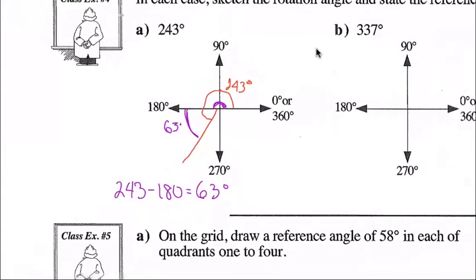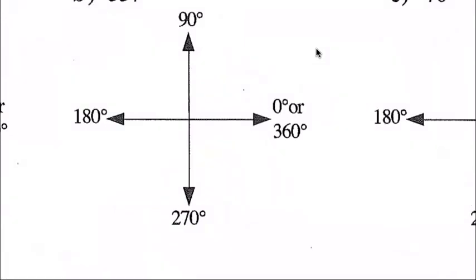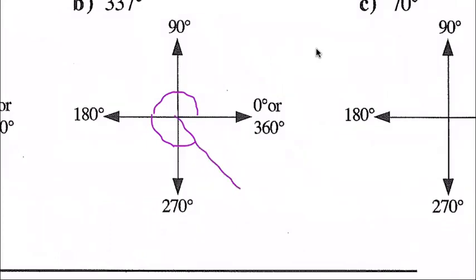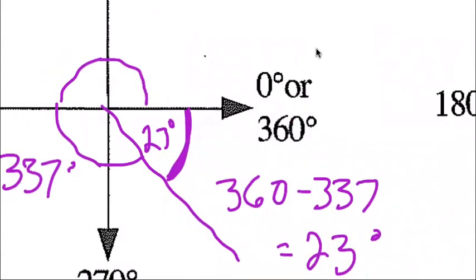Question B: 337 degrees. Start on the positive x-axis, go counterclockwise — 90, 180, 270 — and 337 is somewhere in quadrant four. Label that 337 degrees. The reference angle to the closest x-axis: 360 minus 337 equals 23 degrees.